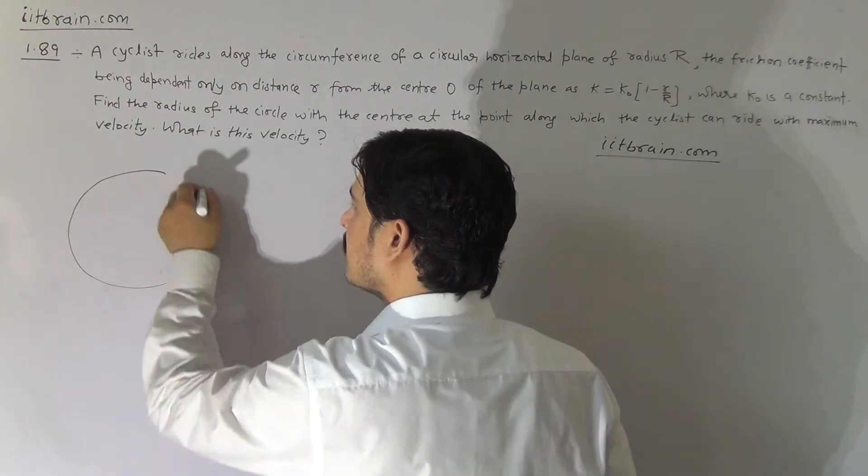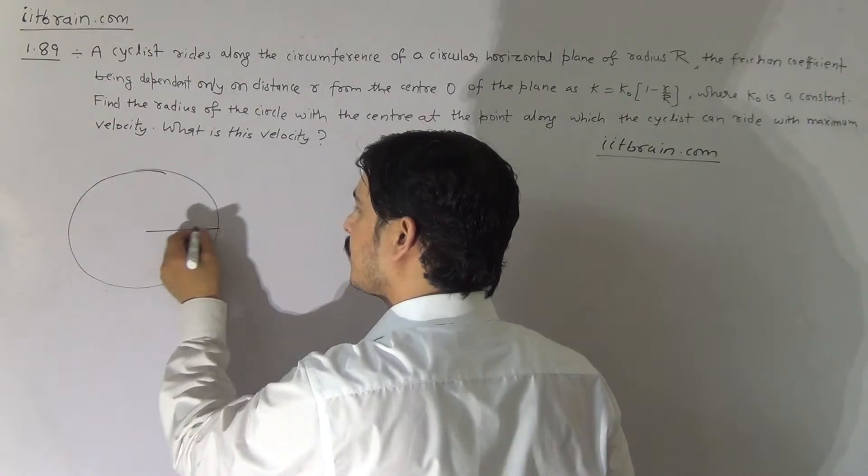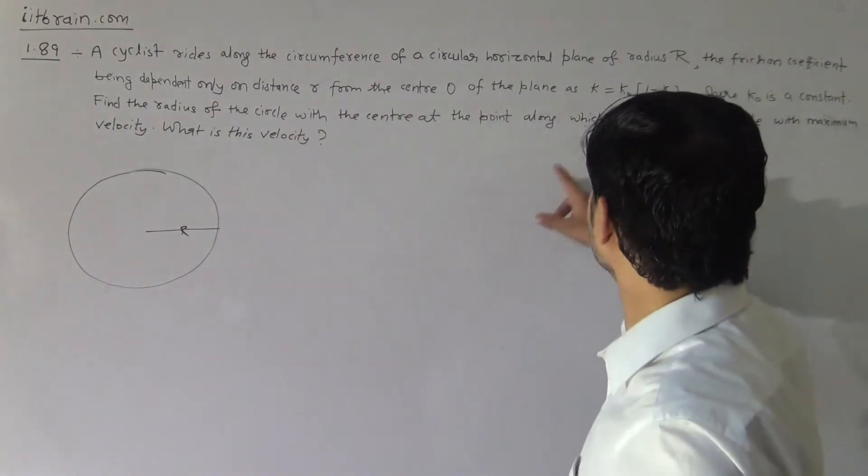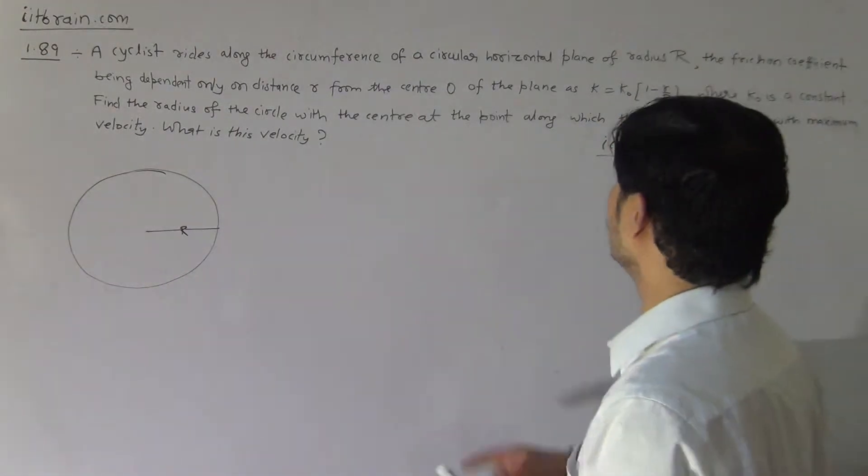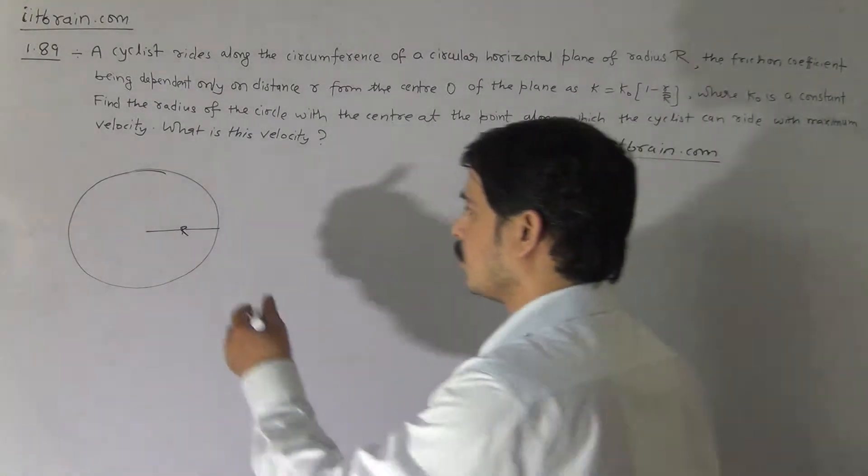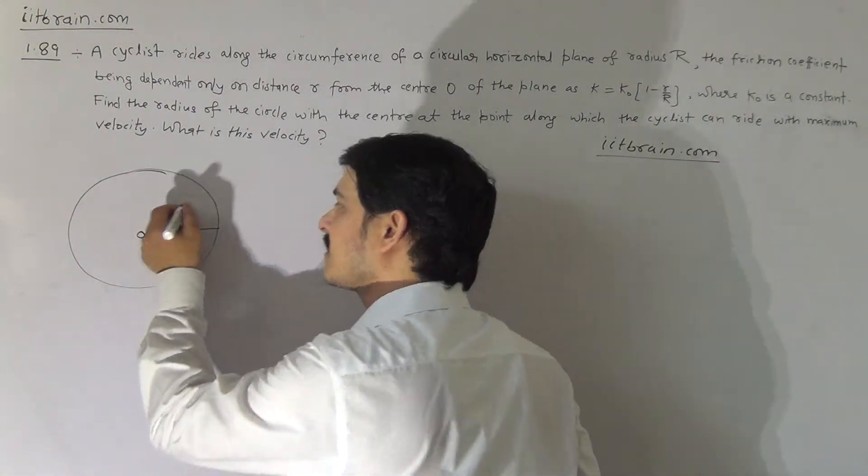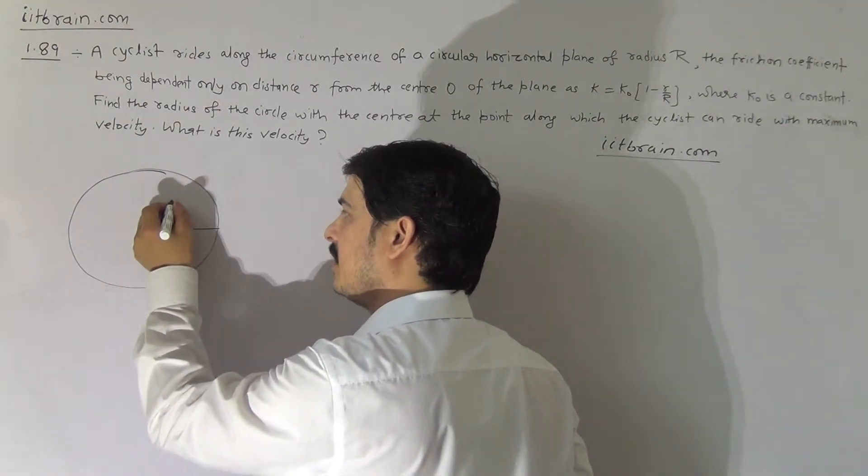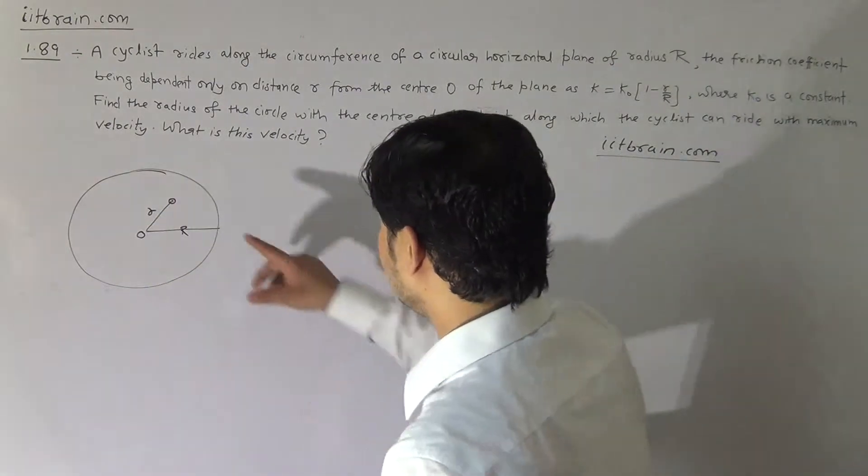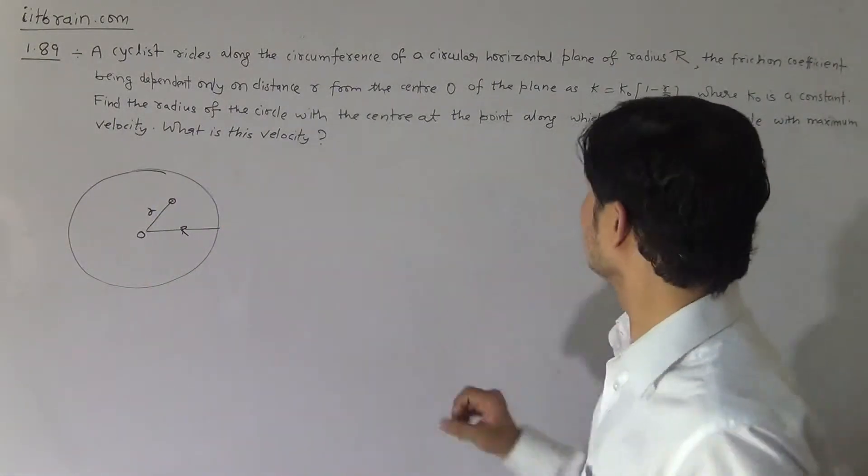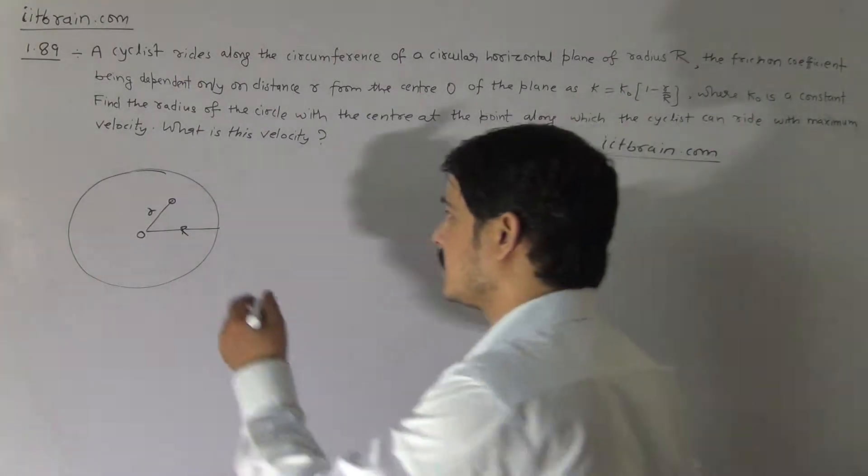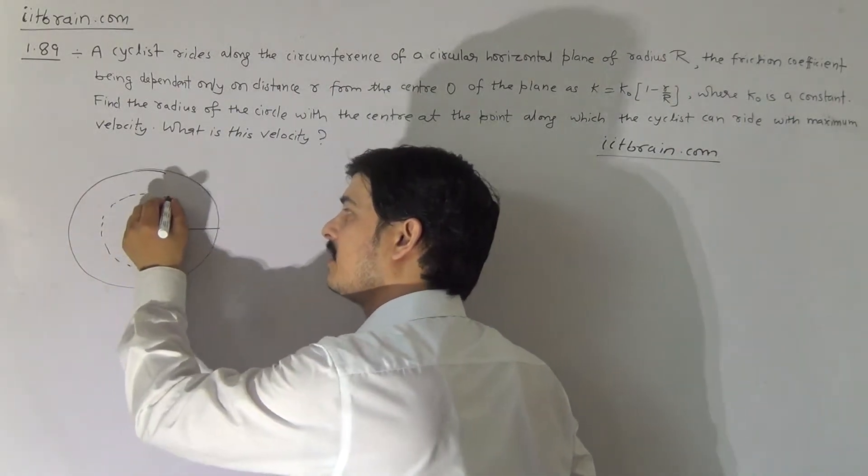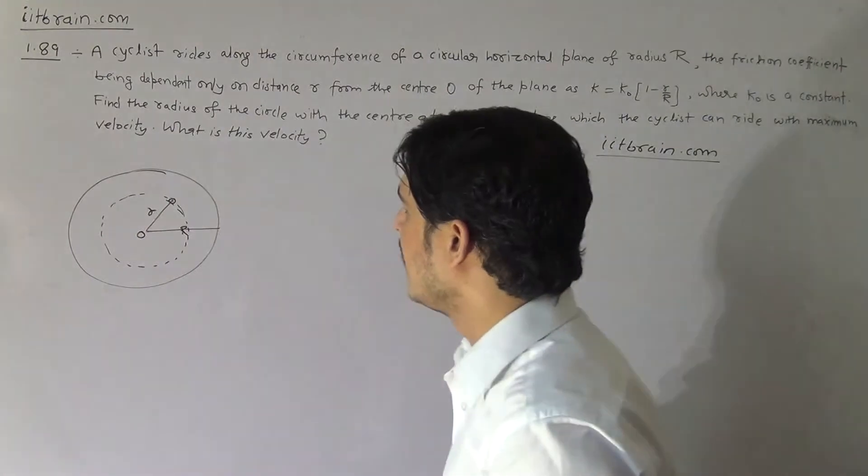So clearly in this problem, a cyclist is revolving the cycle on the circumference of a circular plane of radius R. Here, a special condition is given: the coefficient of friction varies with distance from the center point. It means if at a point at a distance r we consider the value of friction, then the value of k at this place will be k naught times one minus r over R, and this will be the same for all points having the same distance. So in the circular plane, at every point on the circular path, the value of friction coefficient is k naught times one minus r over R.